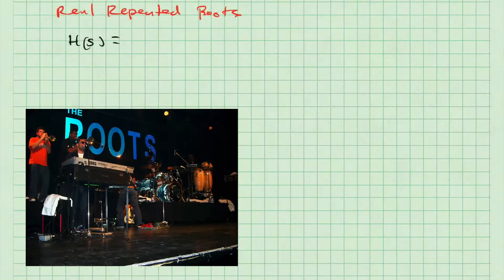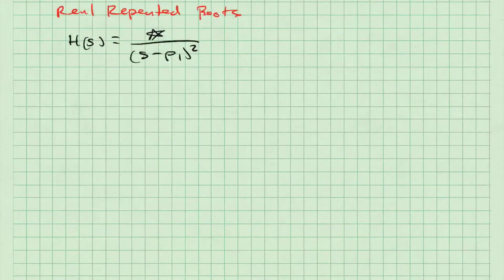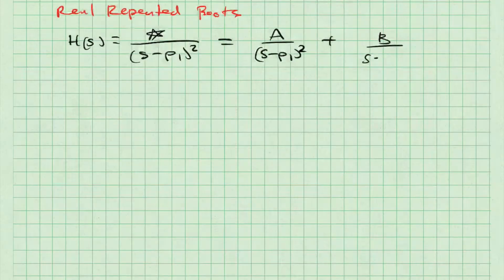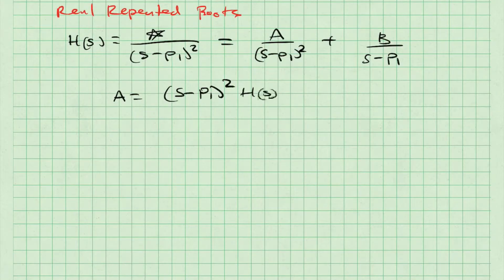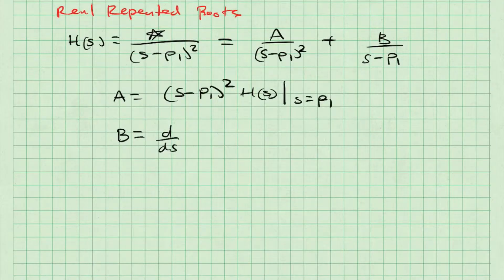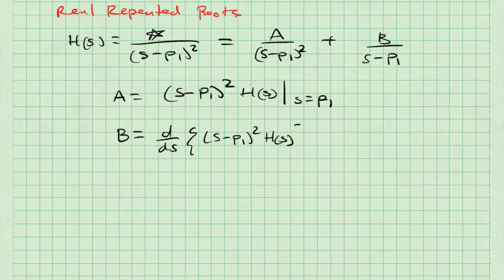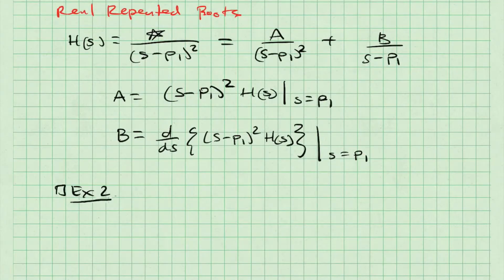Let's move on to the next case: repeated roots. In the case of repeated roots, I have a function H of S which equals some numerator divided by (S minus P1) squared — in other words, P1 is repeated twice. The decomposition looks like this: A over (S minus P1) squared, plus B over S minus P1. Finding A is straightforward: A equals (S minus P1) squared times H of S, evaluated at S equals P1. However, finding B is slightly more complicated. B is going to be equal to the derivative with respect to S of (S minus P1) squared multiplied by H of S, evaluated at S equals P1.